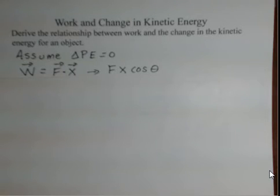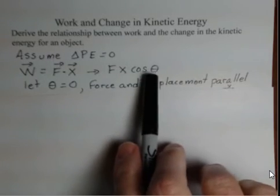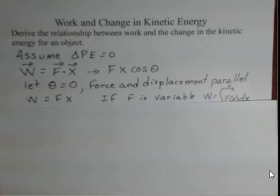Work is the force times the displacement. These are vectors, and we're going to take a special situation here where the force and the displacement are parallel. So the angle will be zero and cosine of zero is a factor of one, so we just get that work is the force times the displacement. However, we are going to allow the force to be variable.